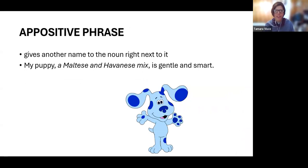Kind of tricky one is an appositive phrase. It gives another name to the noun right next to it. So, my puppy, a Maltese and Havanese mix, is gentle and smart. So, it's actually pretty easy. You just put a little phrase next to the subject that you're modifying.